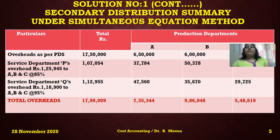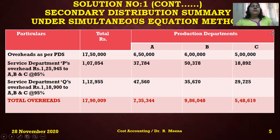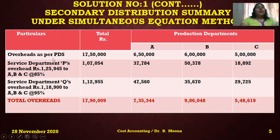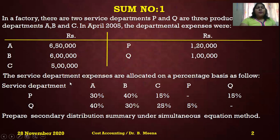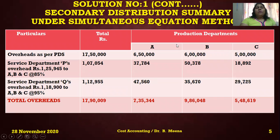Now prepare the secondary distribution summary under the simultaneous equation method. Under this method, columns are: Particulars, Total, and production departments A, B, and C only — service department columns do not appear. Write the overheads of A, B, and C as per the problem — 6 lakhs, 50 [thousand], 6 lakhs, and 5 lakhs respectively — and get the total of 17 lakh 50 thousand.